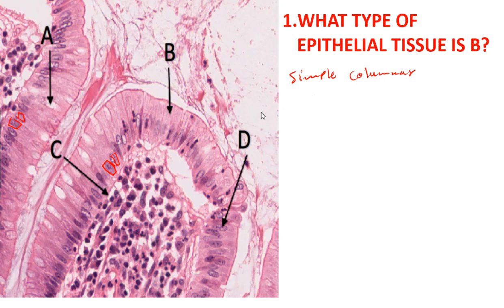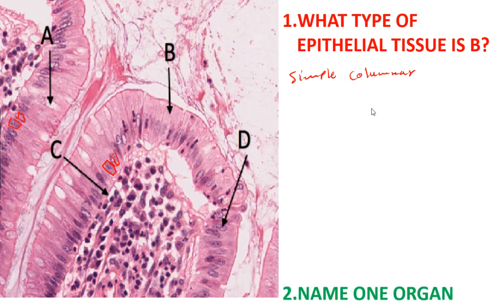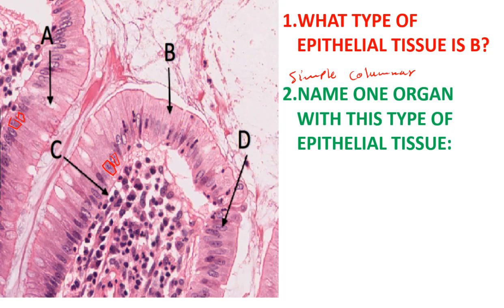This type of epithelium is normally found in the GIT. Specifically, when you talk about the stomach, the ileum, the duodenum, and the jejunum — all these organs have this type of epithelium. The next question asks: name one organ with this type of epithelium.